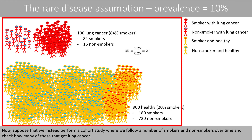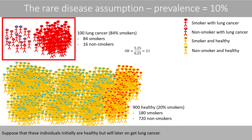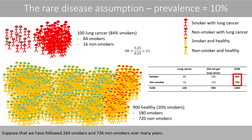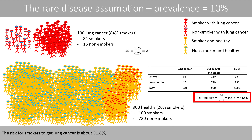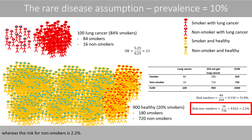Now, suppose that we instead perform a cohort study, where we follow a number of smokers and non-smokers over time and check how many of these get lung cancer. Suppose that these individuals initially are healthy but will later on get lung cancer. Suppose that we have a cohort of 264 smokers and 736 non-smokers over many years. 84 of the smokers got lung cancer, whereas only 16 out of the 736 non-smokers got lung cancer.